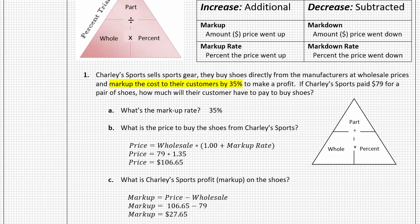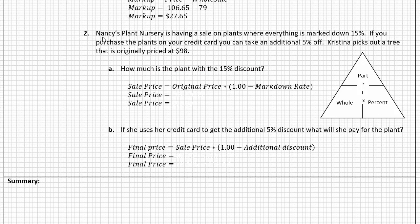Let's try our second problem. Nancy's Plant Nursery is having a sale where everything is marked down 15%. If you purchase plants with your credit card, you can take an additional 5% off. Christina picks out a tree originally priced at $98.00. Let's look at what they want us to calculate. We're first being asked: how much is the plant with just the 15% discount? I've done some setup here, so let's figure this out using the triangle.